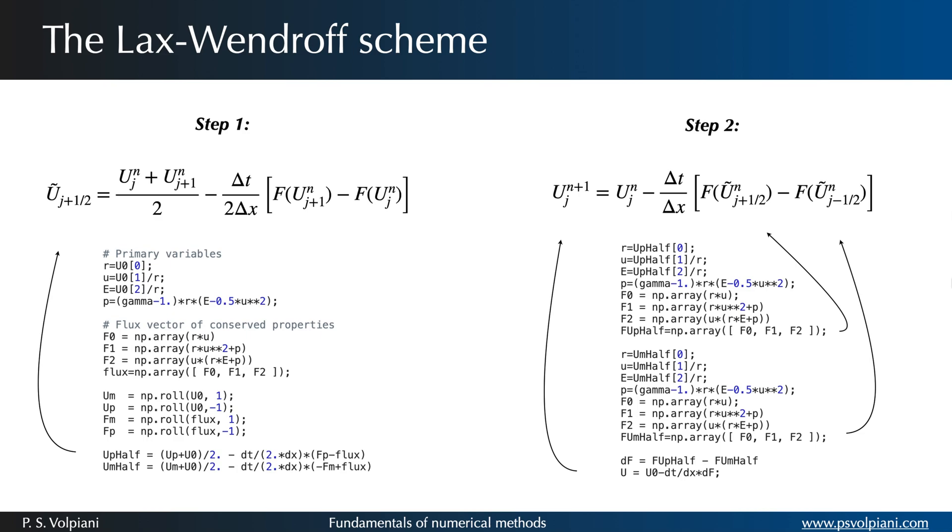They should be prescribed by appropriate boundary conditions. Since the tube is assumed infinite, we impose the initial condition on the left in the first cell and the initial condition on the right in the last cell in every iteration. This is equivalent to leaving unchanged the first and last components of the solution vector.